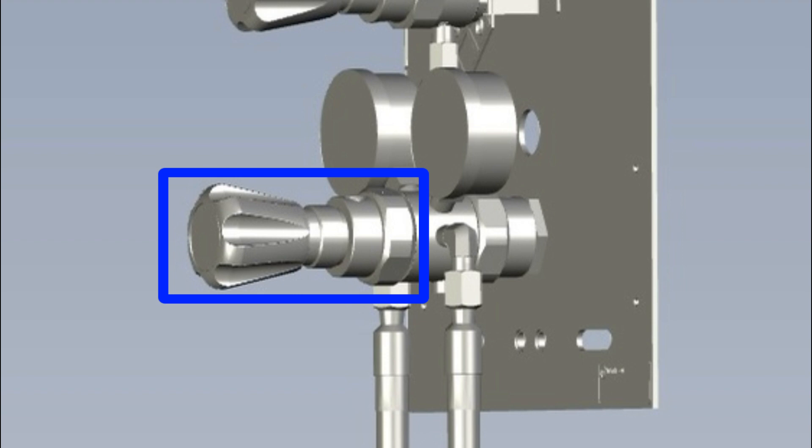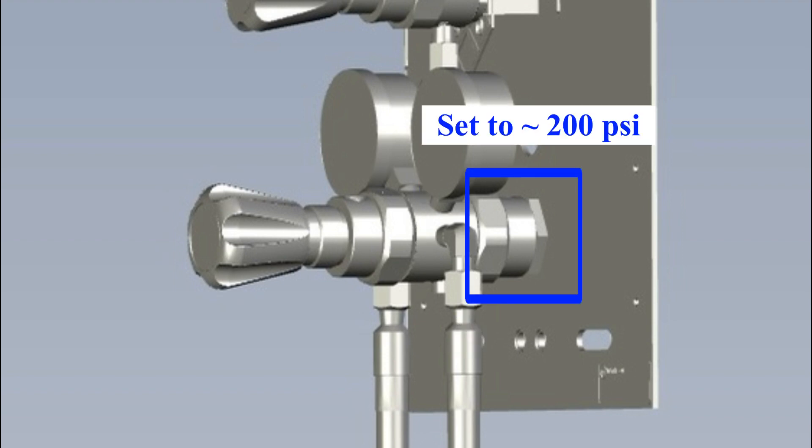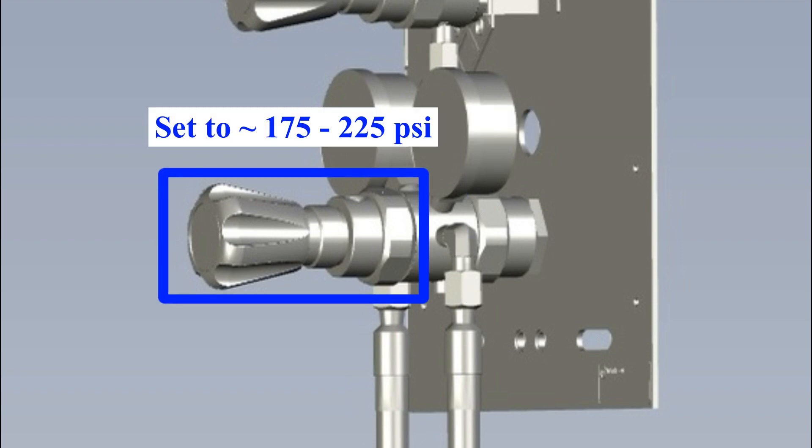The front regulator is for the gas source on the right side. The back regulator for most switchover systems is set for about 200 psi, and the front regulator swings from about 175 to about 225 psi depending upon the position of the arrow knob.